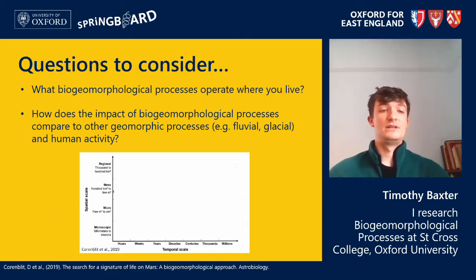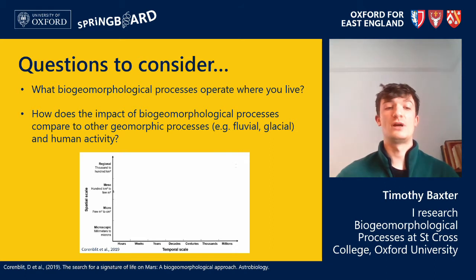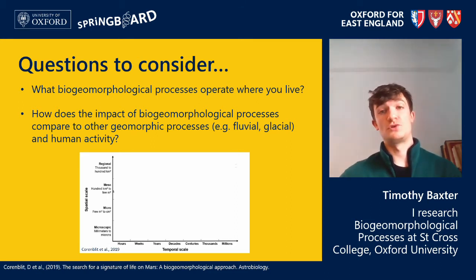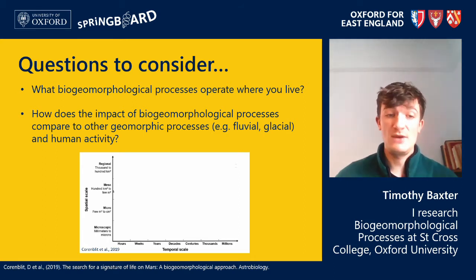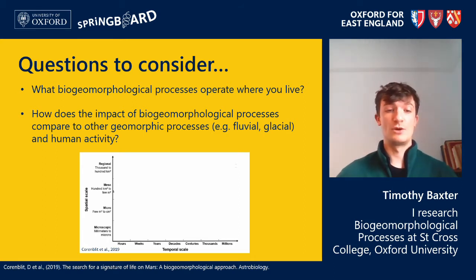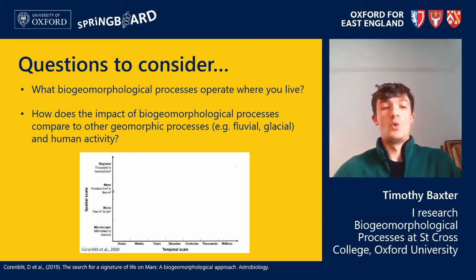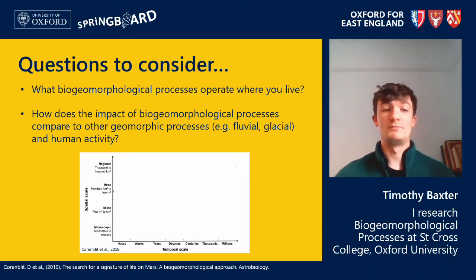To end with, I'd like to leave you with a few questions to think about. Firstly, what biogeomorphological processes can you identify around where you live? When considering this question, you may want to first think about the type of environment you live in and the wildlife found there. Are you near forested, coastal or urban environments? You may then want to consider what material biogeomorphic processes could be operating on — this could be soil, rock, or even man-made construction materials such as concrete. Finally, you may want to think about which process may be occurring: is it likely to be bioconstruction, bioerosion or bioprotection?